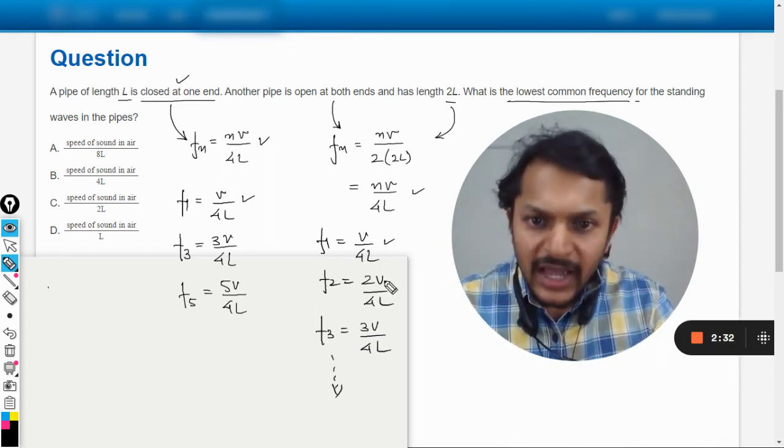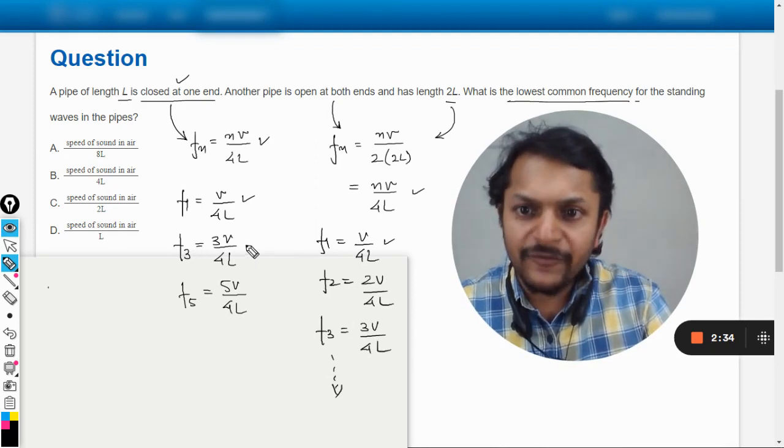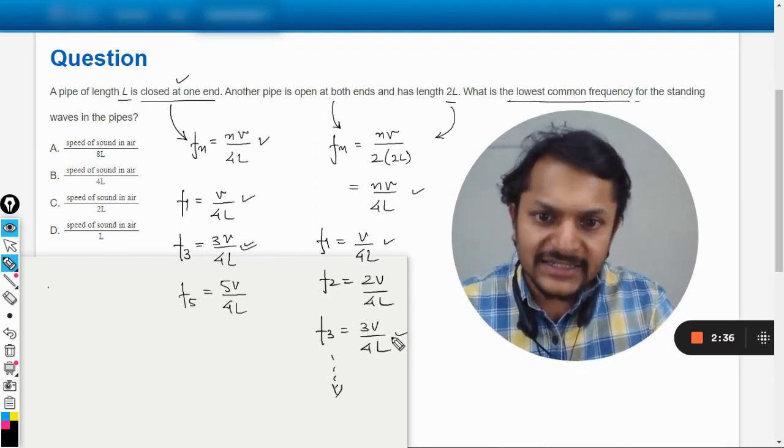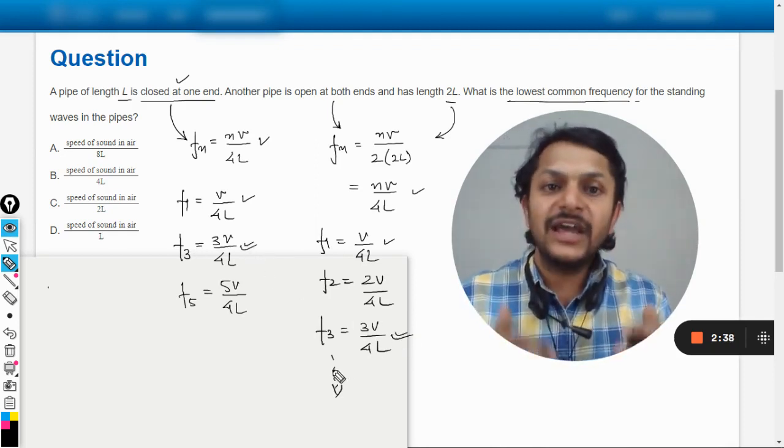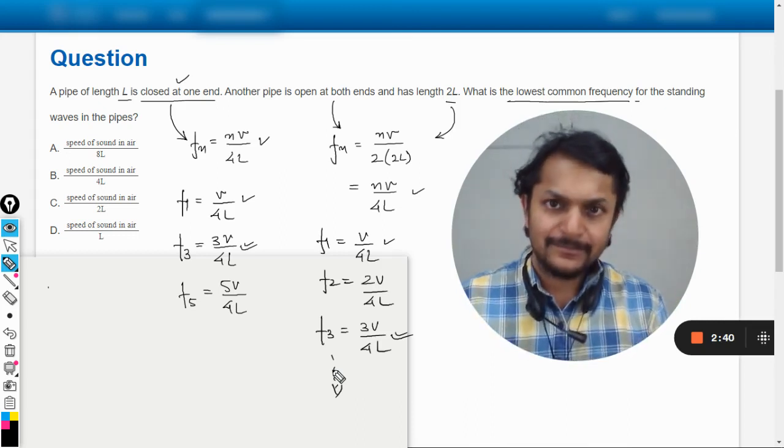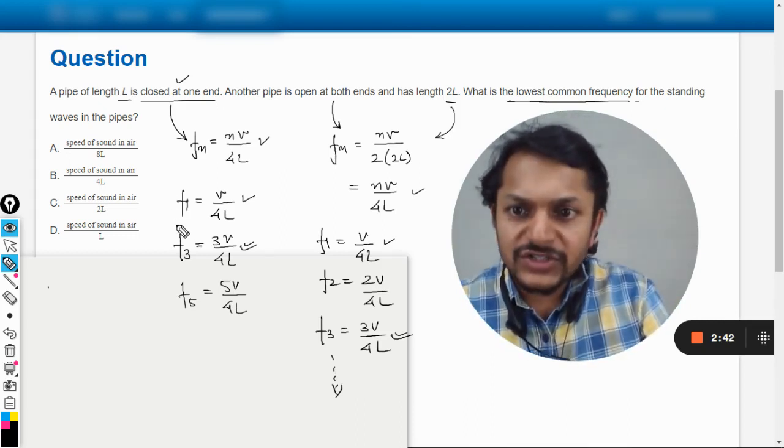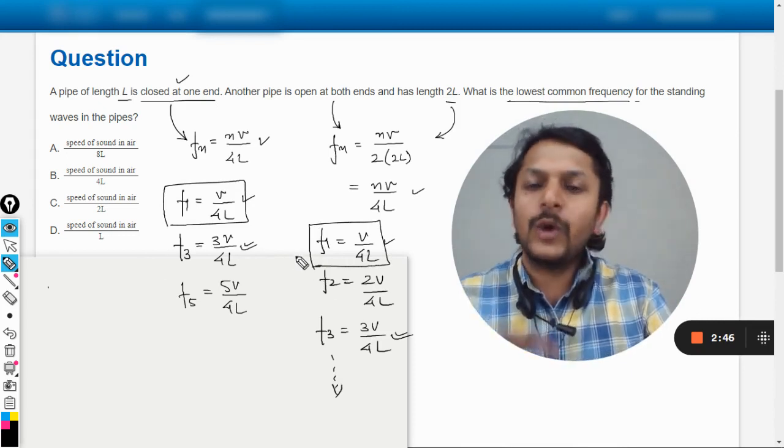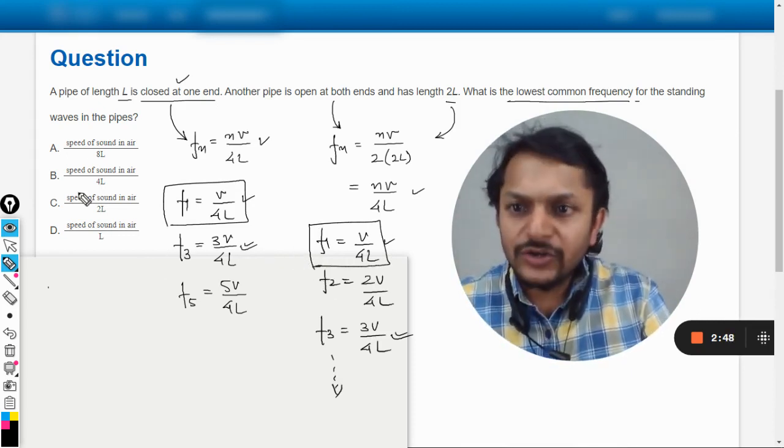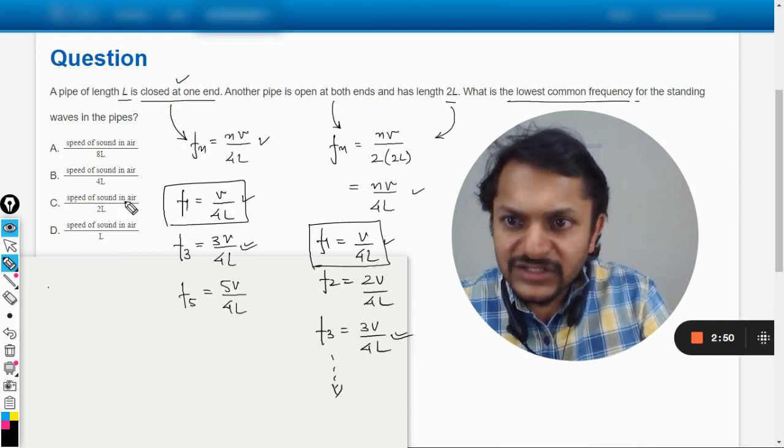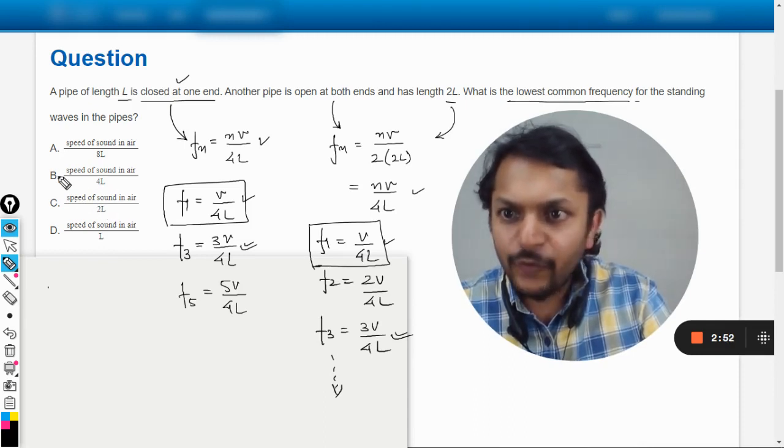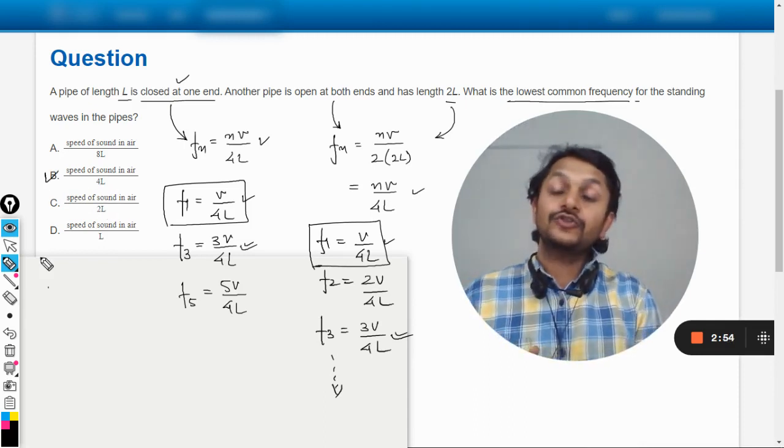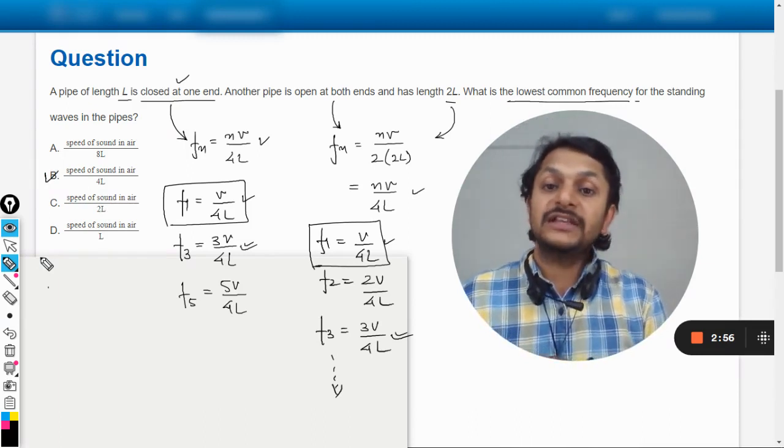so it will be this one and this one. What is the lowest frequency according to the options? We see the speed of sound in air divided by 4L, and yes, the answer should be B. This is how we do this question, my students.